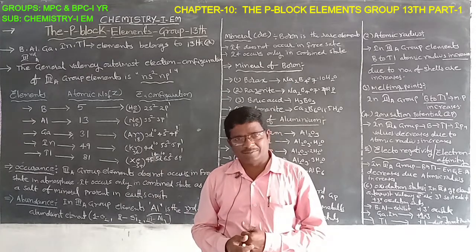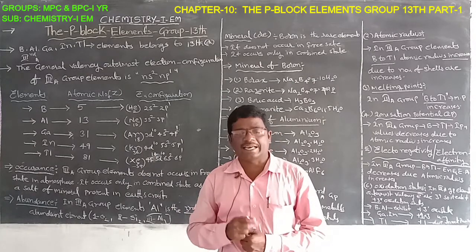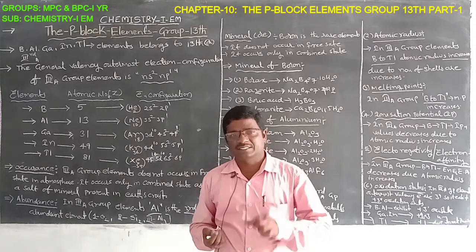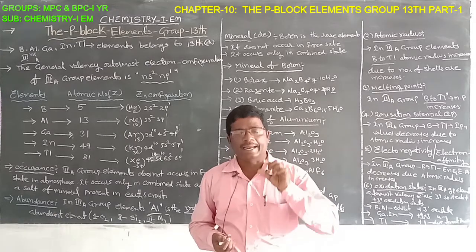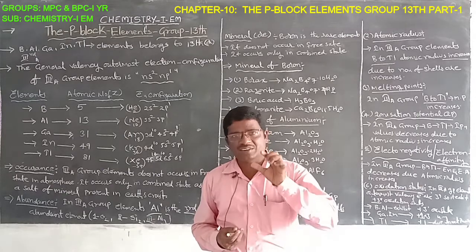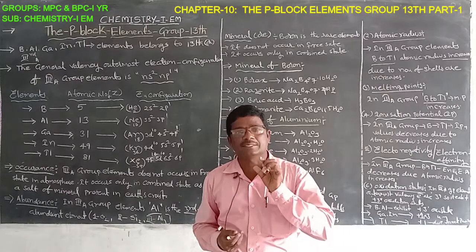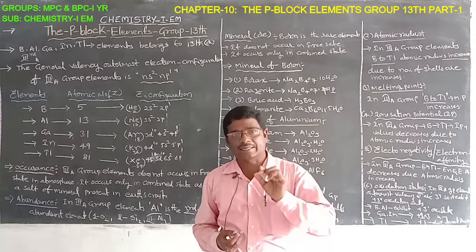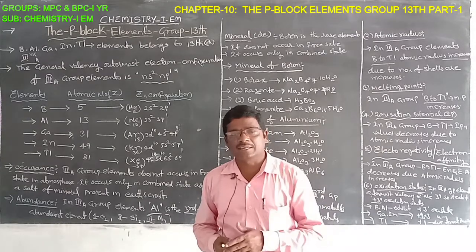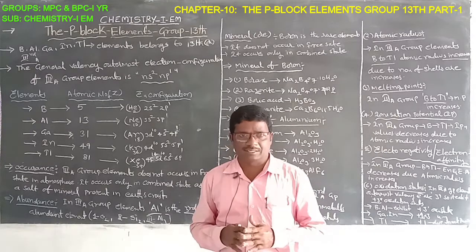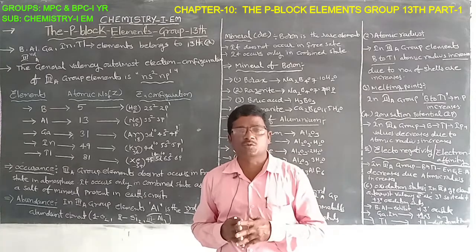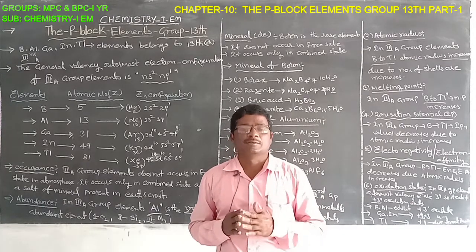What is P-Block elements? The differentiating electron — that is, the last electron entering into the P-orbital — is called P-Block elements. The P-Block elements are Group 3rd to 7th year and Group 0 elements, also called P-Block elements.